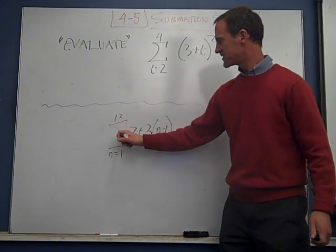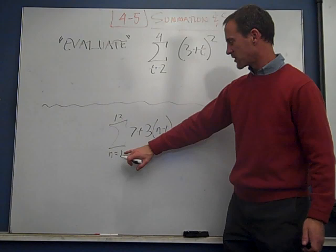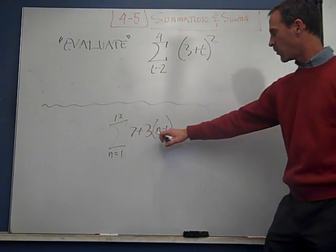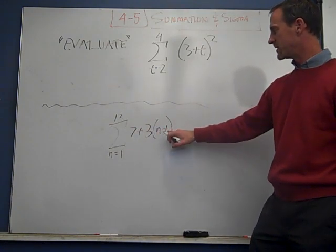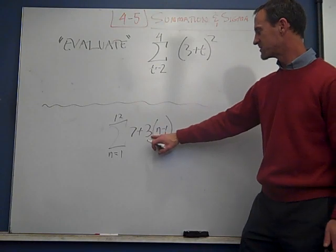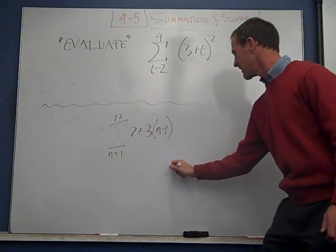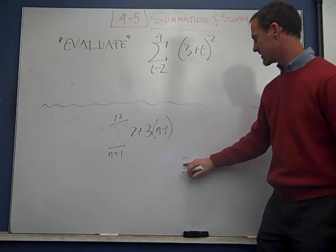Again, the summation sign tells us we're adding up 12 terms from 1 to 12. When I plug in 1 right there, 1 minus 1 is 0. 0 times 3 is 0, and I start off with 7.